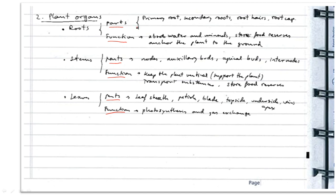Which are the parts of the roots? We have primary roots, secondary roots, root hairs, and root cap. In your book, you have a good picture of a root with all of these parts. It's important to know where they are and what their functions are. In general, the functions of the root are to absorb water and minerals from the soil, thanks to the root hairs. Also, roots can store food reserves — for example, beets and carrots. And the other function is that the roots anchor the plant to the ground so the plant can stand in the soil.